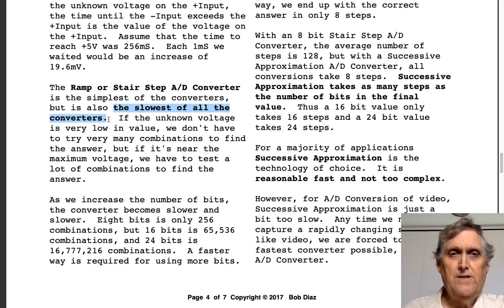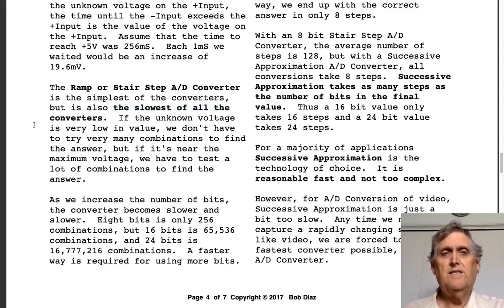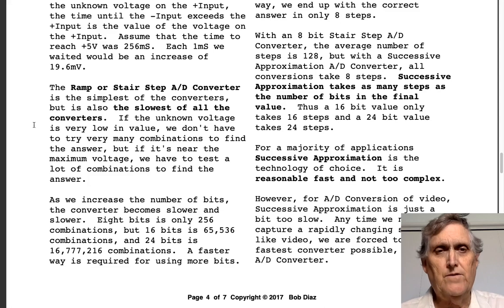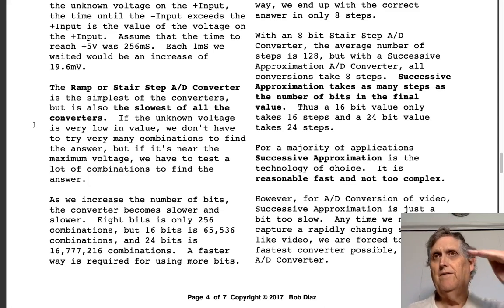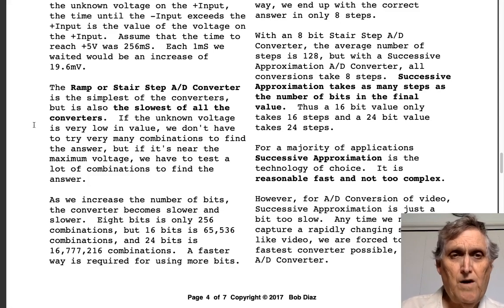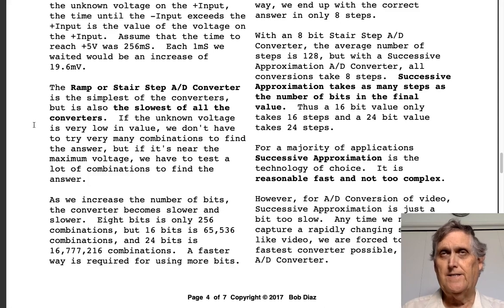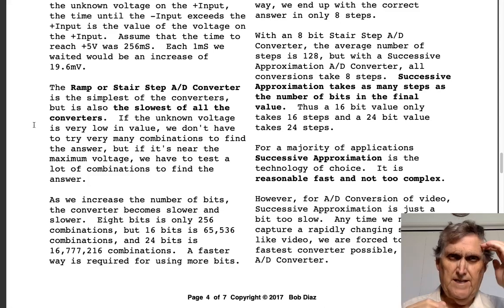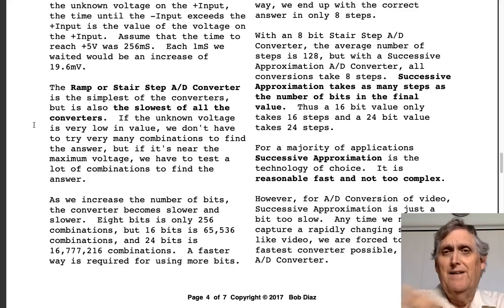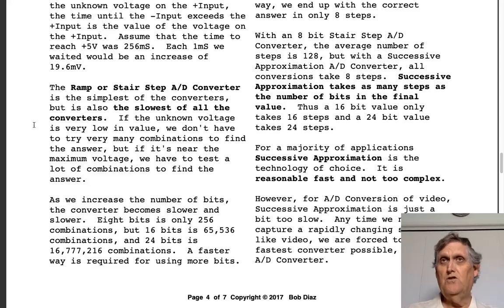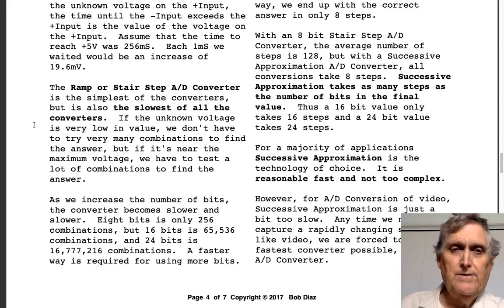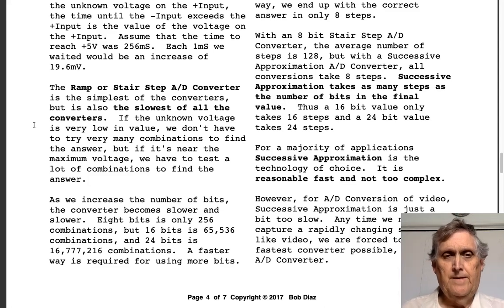The ramp or stair-step A/D converter is the slowest of all analog-to-digital converters. If the unknown voltage is very low, not much testing is needed, but high values require many combinations. Interestingly, Sony made a video chip for high-def where they ran many stair-step A/D converters in parallel — all 1920 pixels on a line were converted at once. It worked pretty well for 8 bits, but don't try 10 bits.